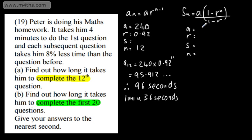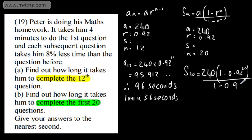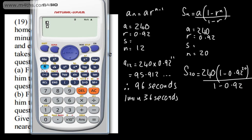We've got a is 240. Remember, that's in seconds. Ratio is 0.92, and the number this time is going to be 20. So the sum of the first 20 terms is 240 times 1 minus 0.92 to the power of 20 divided by 1 minus 0.92. Straight to the calculator with this.